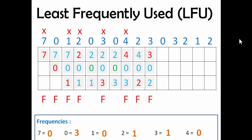The next page is 0 — 3, 0, and 2 will remain there. 0's frequency will get increased — this is a page hit. The next page is 3, which is already present — again there will be a page hit and 3's frequency will increase. Then 2 is already present — there will be a page hit and 2's frequency will be increased.